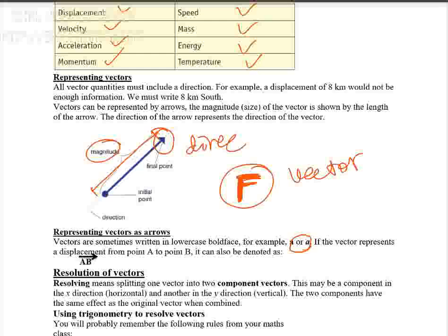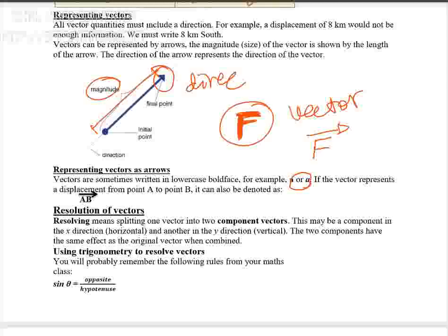The third way of representing a vector is by writing an arrow above the letter. For example, force is a vector and after writing F you can write an arrow above the letter. So we can represent vectors in three ways: by an arrow above the letter, by bold lettering, and by a graphical arrow.